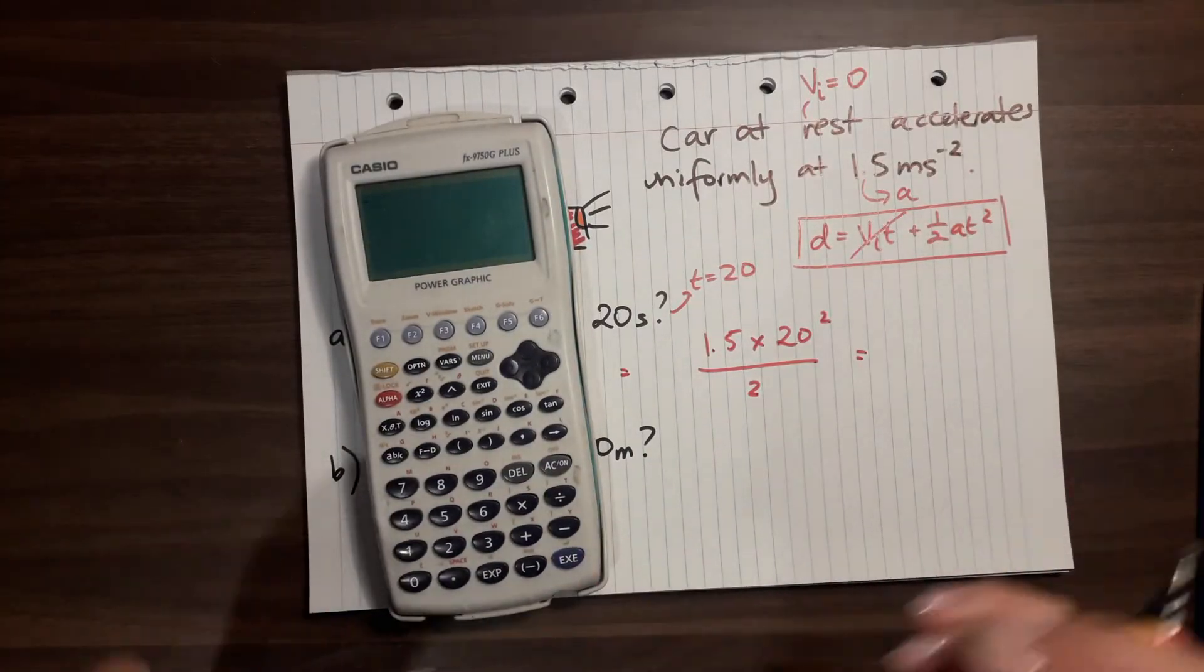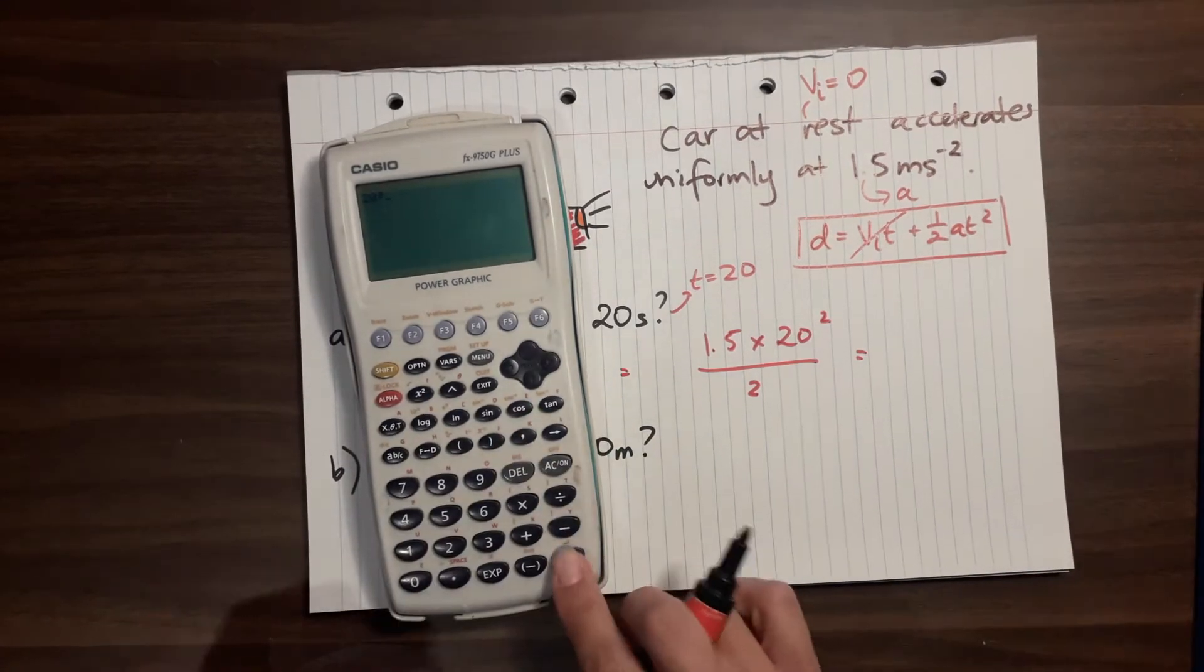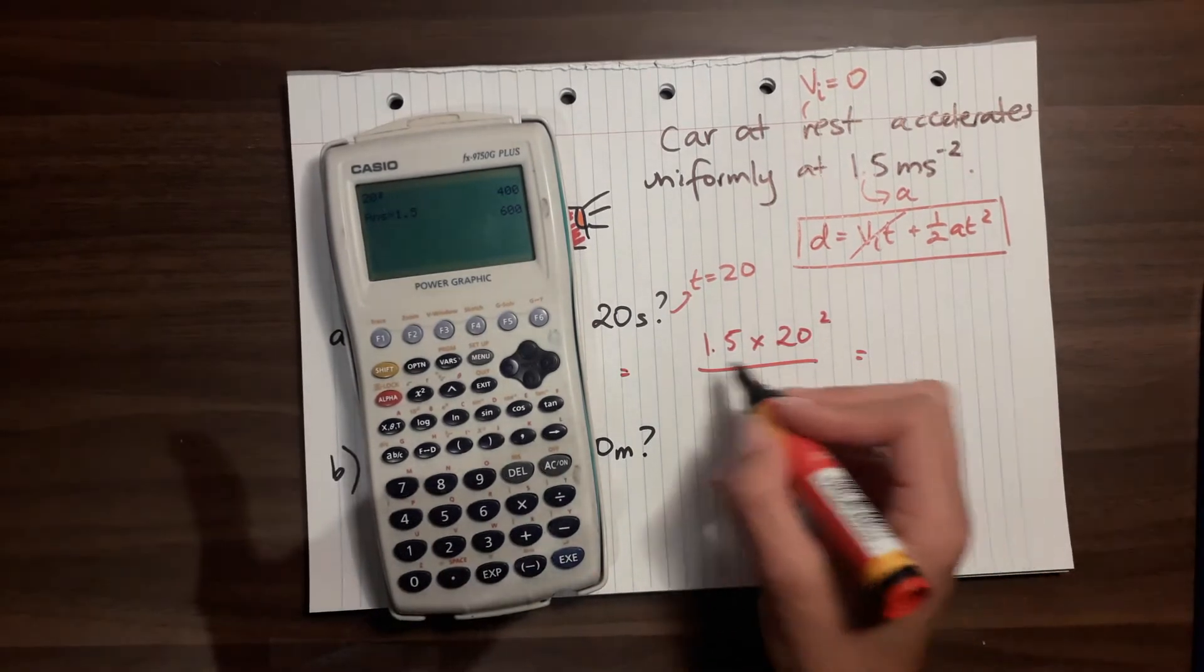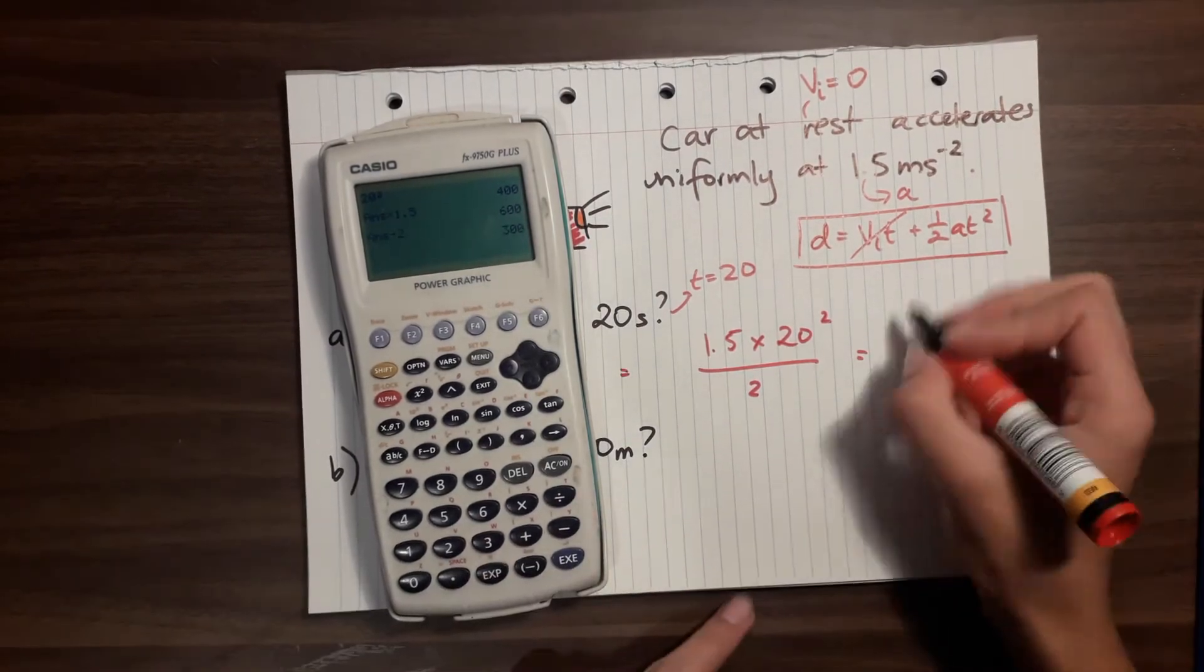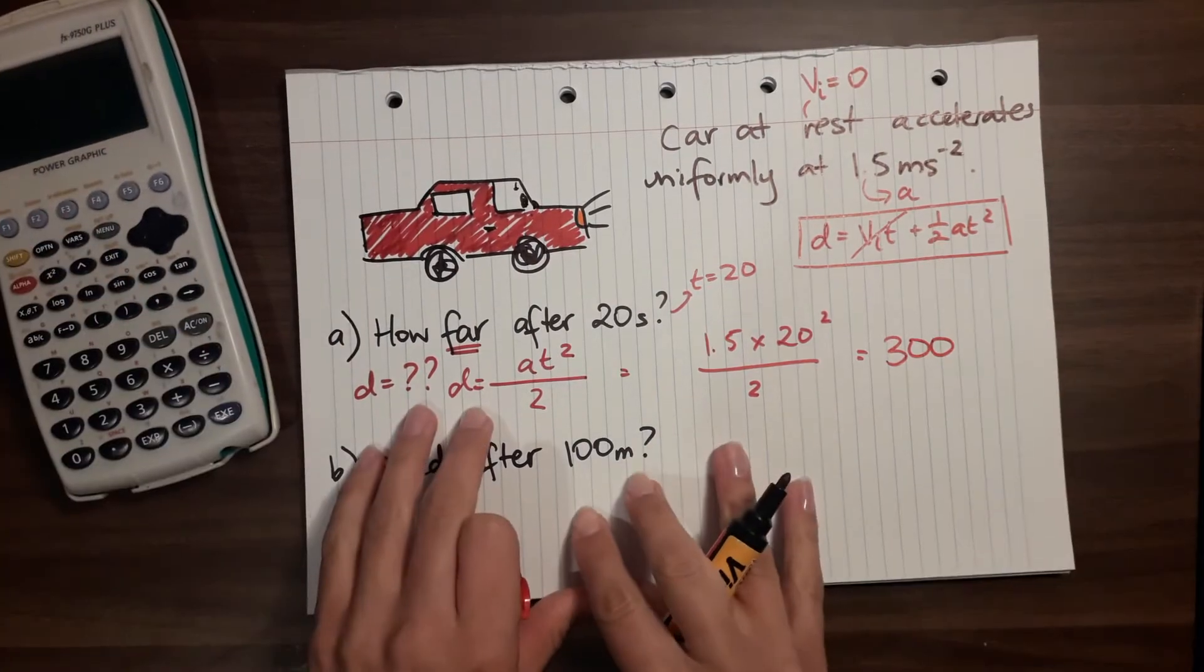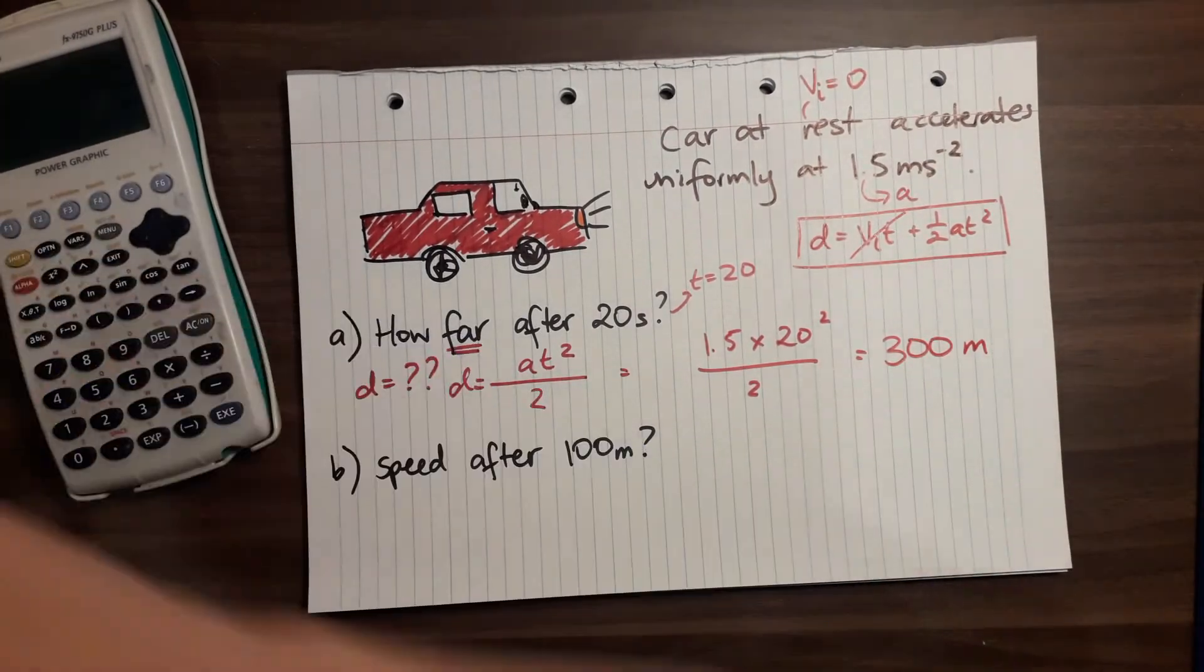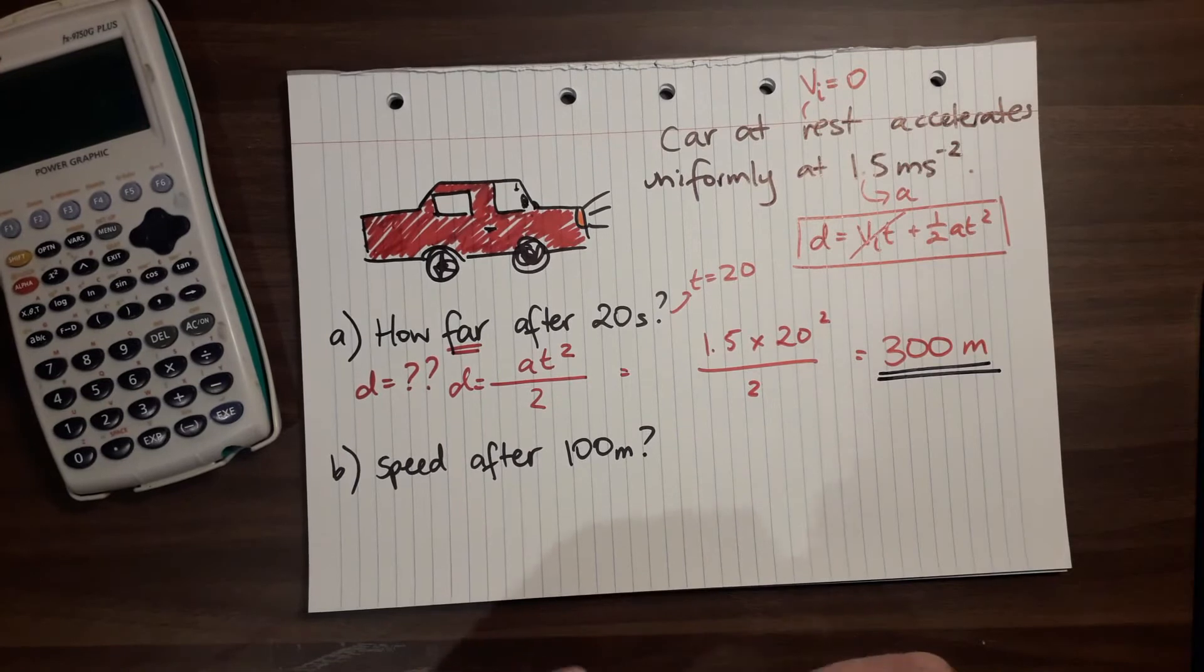When I use my calculator I always like to do a big math kind of thing, so I like to go 20 squared equals, then I times that by 1.5, then I press equals, because then I know that that whole number will be now divided by 2. The answer is 300 - 300 what? We're calculating distance, so that's 300 meters. I always like to underline my answer so people can find it easily.